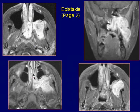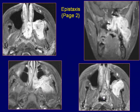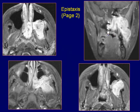Axial post-gadolinium fat saturation T1-weighted images show the lesion is intensely enhanced with contrast. Coronal post-gadolinium fat saturation T1-weighted image demonstrates the enhancing lesion that involves the left masticator space, pterygopalatine fossa, and posterior nasal cavity. The low signal seen within the right sphenoid sinus is likely due to fluid related to obstruction of the sinus opening by the lesion.